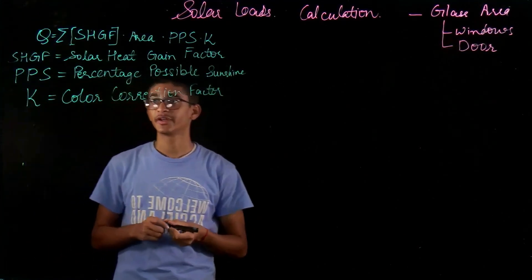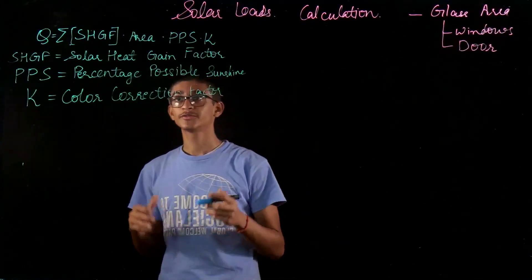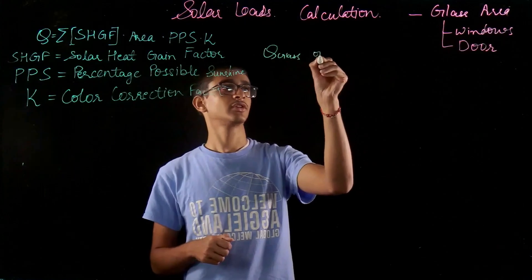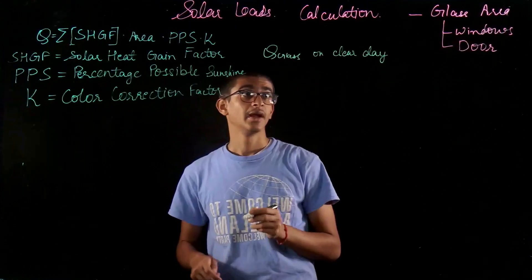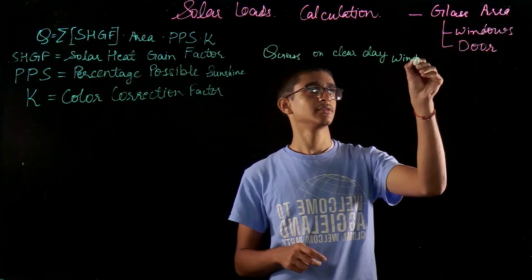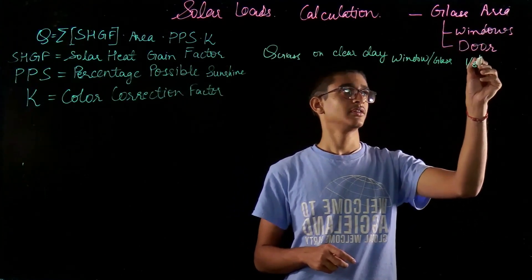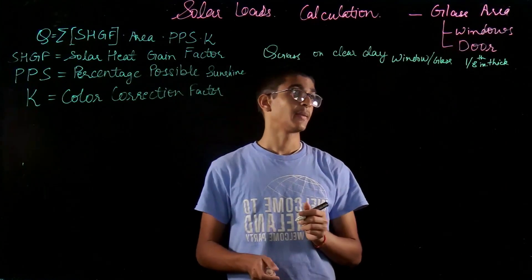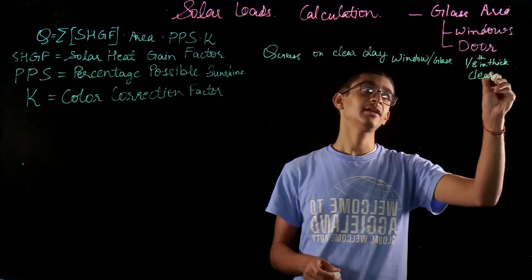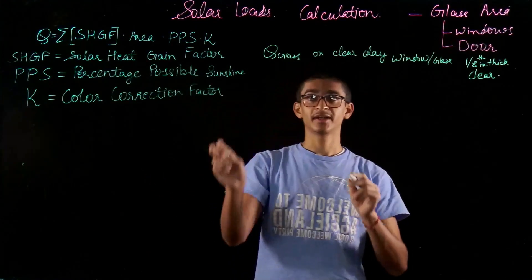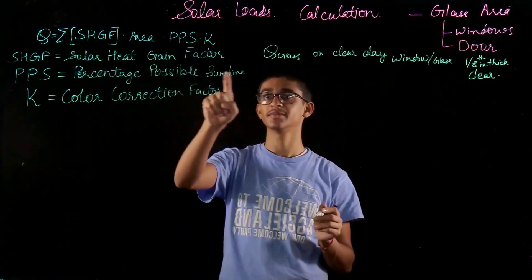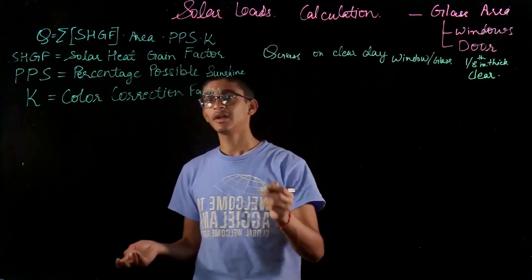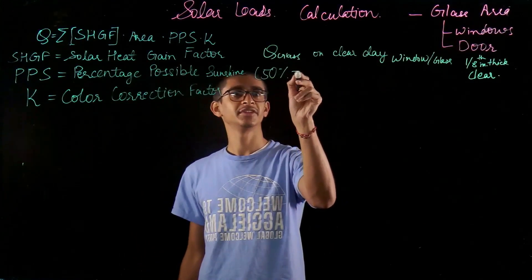PPS is also an important factor, which is percentage possible sunshine. And K is the color correction factor. What SHGF represents is the amount of solar heat gain which is happening through the windows or glass on a clear day, through a window or glass which is one-eighth inch thick, and it is a clear glass. If it is not a clear day, there are some clouds, we'll take into account this factor which is PPS, which says percentage possible sunshine.